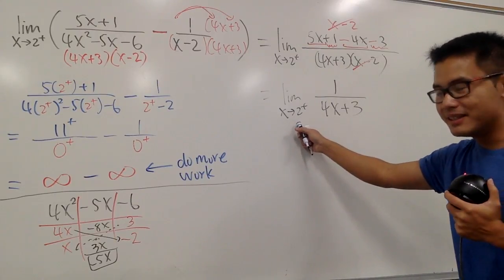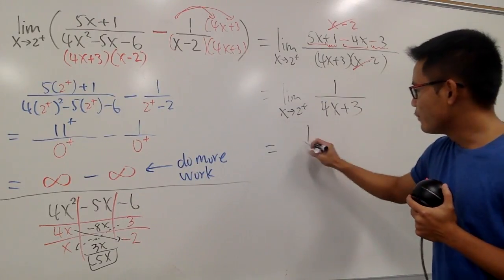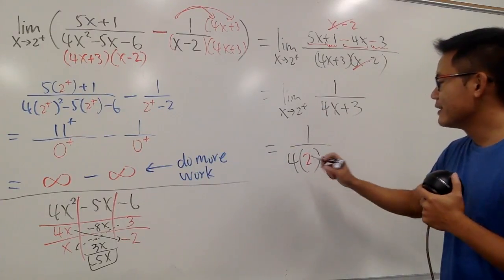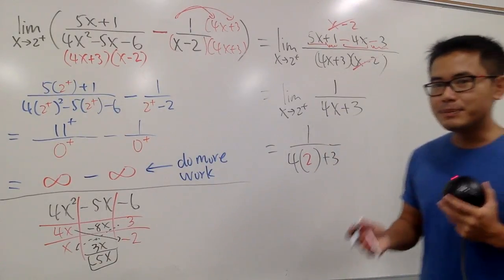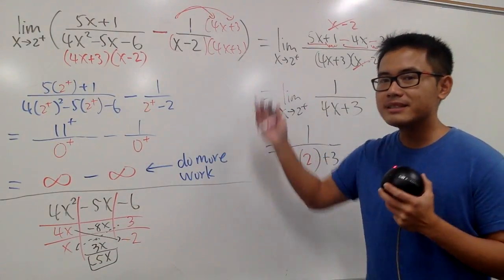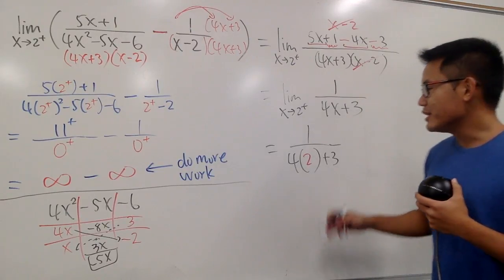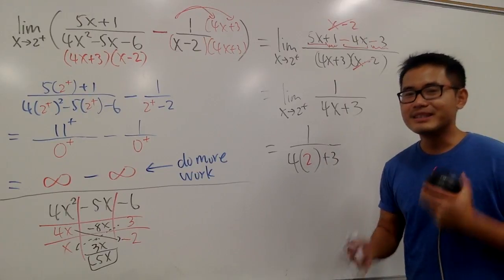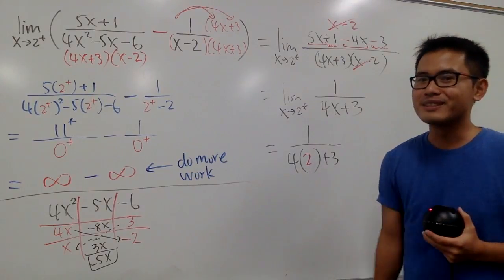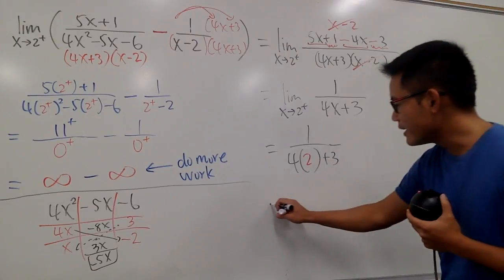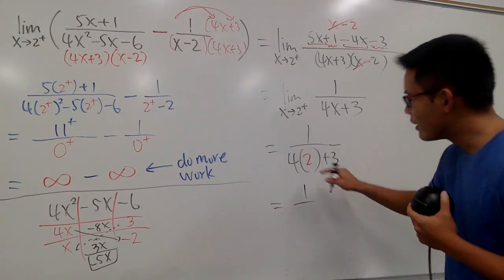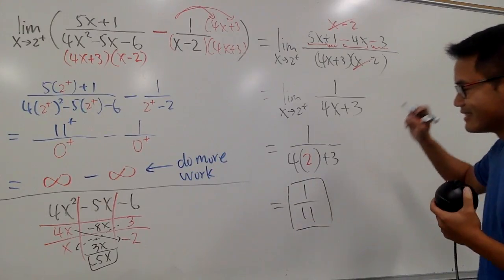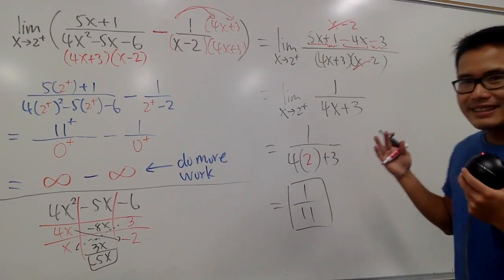After canceling, we have the limit as x approaches 2 plus of 1 over (4x plus 3). Now just plug in x equals 2: that's 1 over (4 times 2 plus 3), which is 1 over (8 plus 3), which is 1 over 11. And that's it — the answer is 1/11.